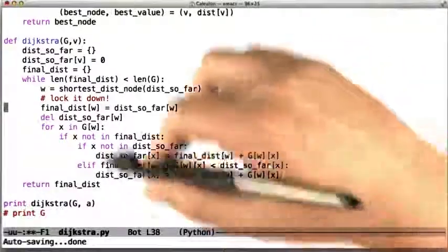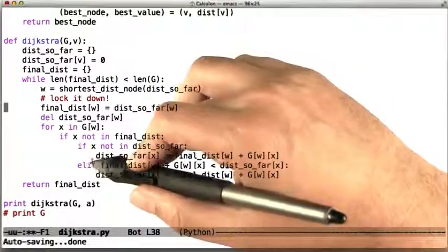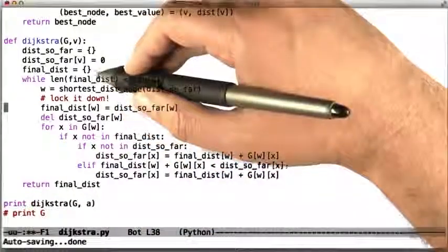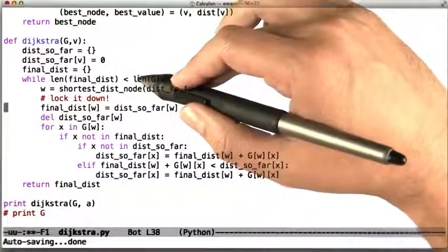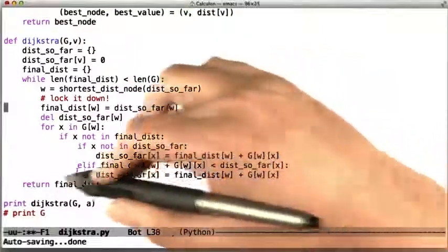And so now we've handled that node. We handle all the nodes for the neighbors of w, and that means we've handled w, we've locked it down, and we can move on. So we go back up and handle the next node closest to the start state. And once we've gone through all of the nodes and assigned them all their final distances, then we return that structure and we're done. So this is the Dijkstra algorithm in a nutshell.